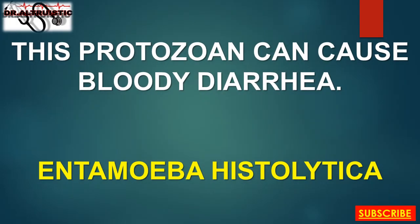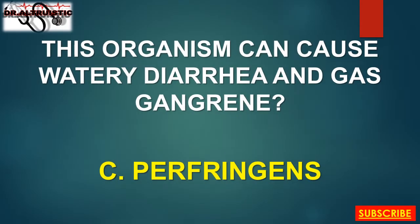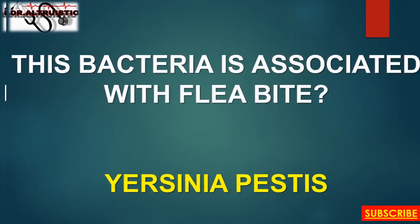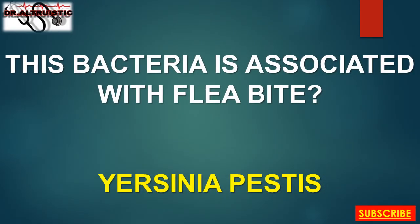This protozoan can cause bloody diarrhea: Entamoeba histolytica. This organism can cause watery diarrhea and gas gangrene: C. perfringens. This organism's toxin disables GI, causing whooping cough: Pertussis. This bacteria is associated with flea bite: Yersinia pestis.